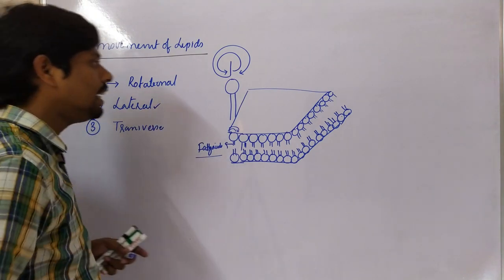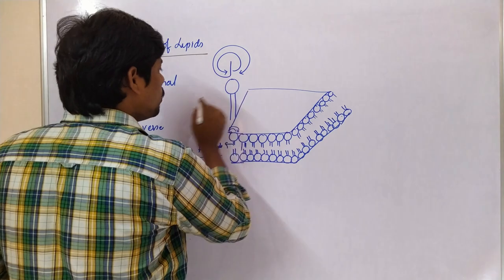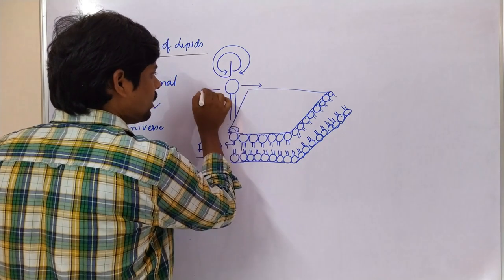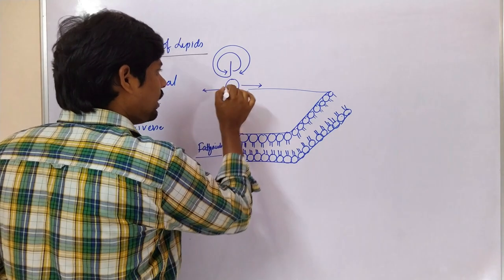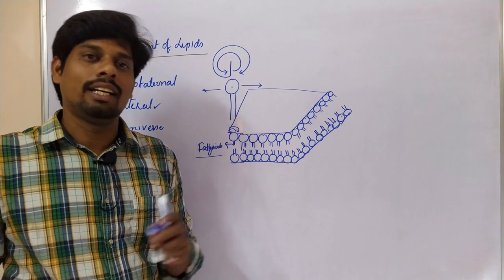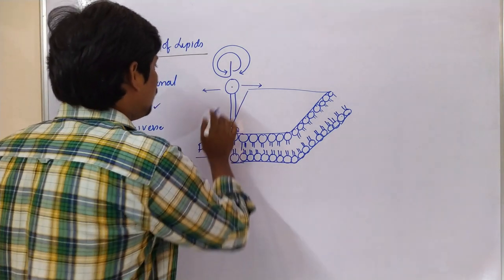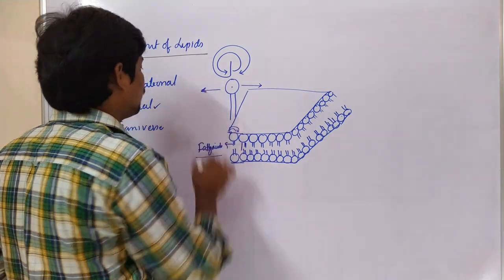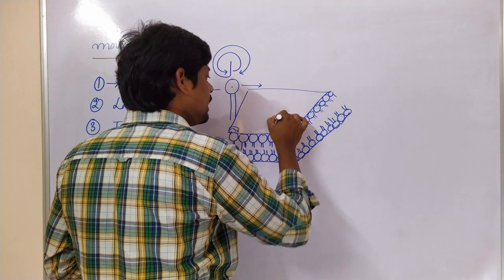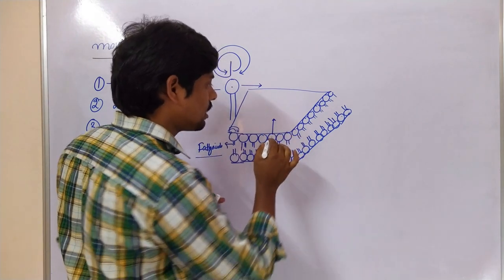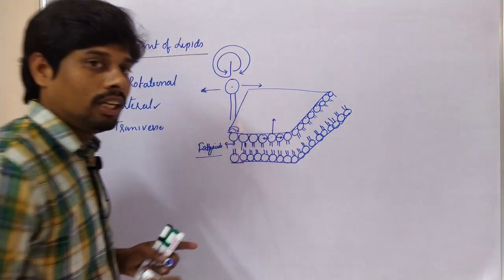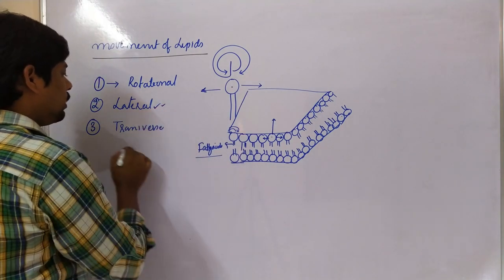Coming to the lateral movement — lateral movement is the movement of lipid moieties to the right and left, front and backward. The movement of lipids in this manner is called lateral movement. For example, this lipid can move in this direction, or in this direction, or in this direction — this movement is called lateral movement.